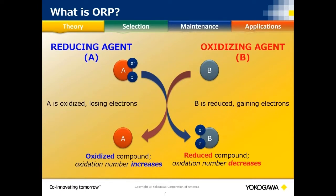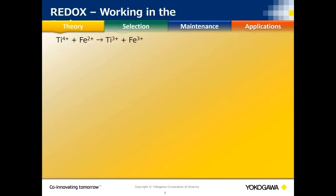The oxidation reaction is where the item gives up electrons, causing its overall oxidation number to increase — this is called the reducing agent. In the reduction reaction, something gains those electrons and its oxidation number decreases — this is called the oxidizing agent. So if we're adding an oxidizing agent into the process, it's causing something in the process to be oxidized. Those reactions generate positive or negative millivolts depending on which reaction is taking place.